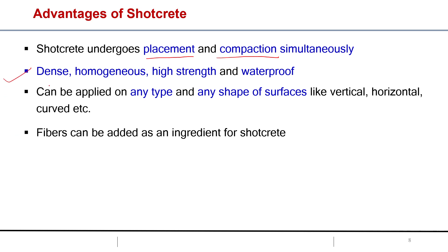Second, dense, homogeneous, high strength, and waterproof layer we are getting in this case. Very important advantage is it can be applied on any type, any shape of the surface. The surface may be vertical, it may be horizontal, or it may be curved, because we don't need to prepare the formwork.